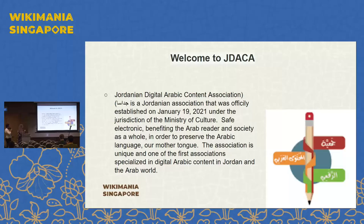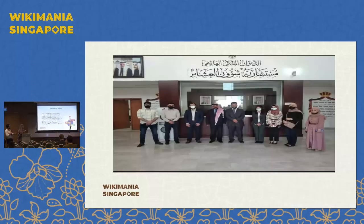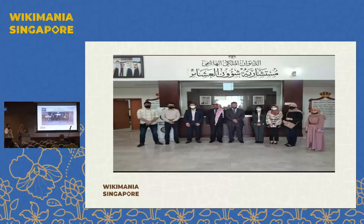This is the logo, and you can find some information about us. We abbreviate it as Jadasa. This is a picture of the team. The team, as in any organization, contains a chair — which is me — and a vice chair, Arine, and we have a treasurer, a secretary, and three other board members.